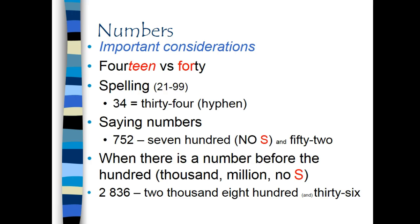Next, for spelling. From numbers 21 to 99, we always spell these words with a hyphen between the numbers. So 34 equals thirty-four hyphen.